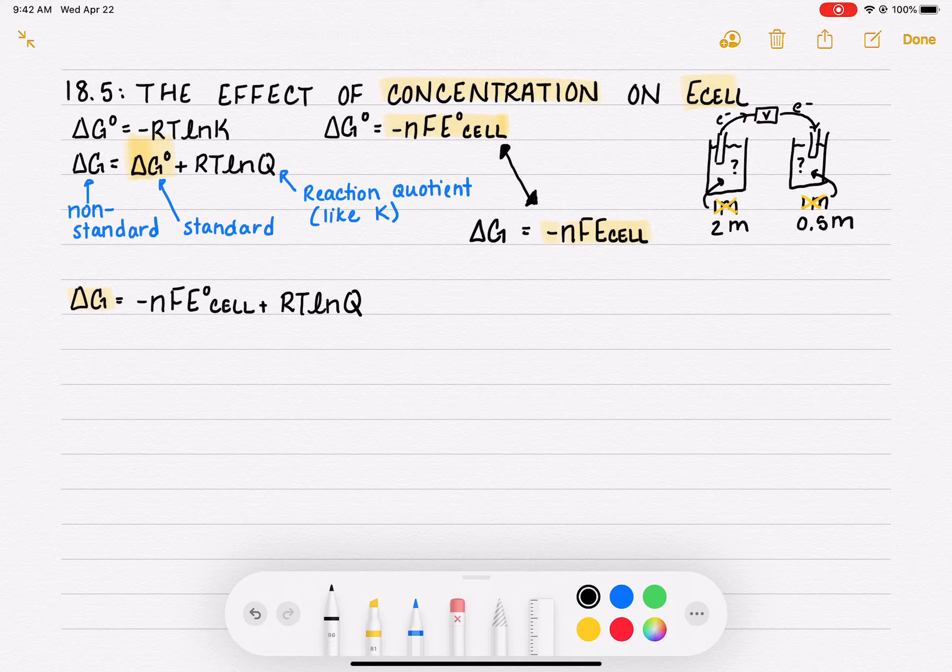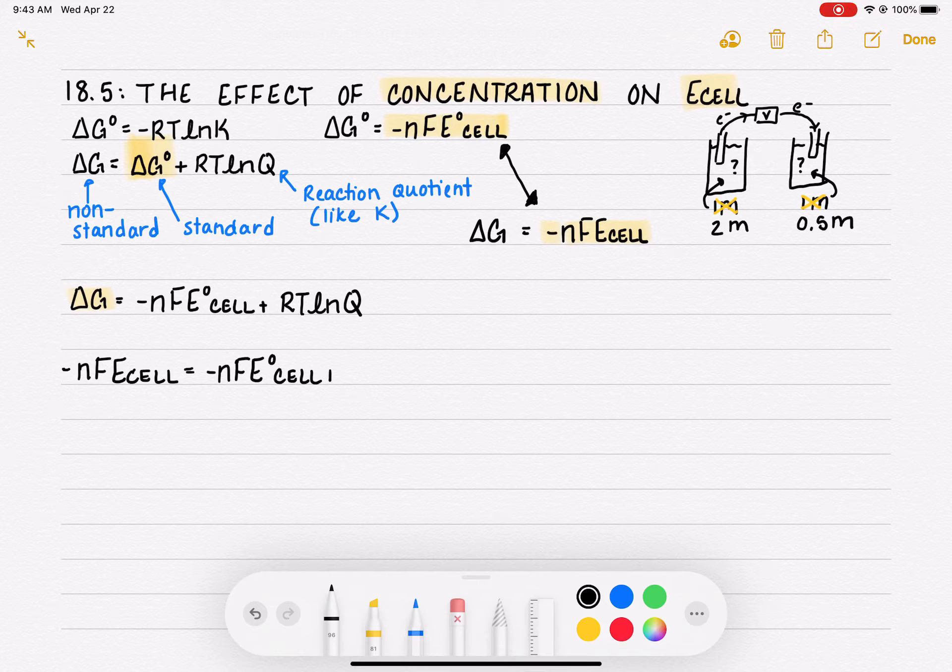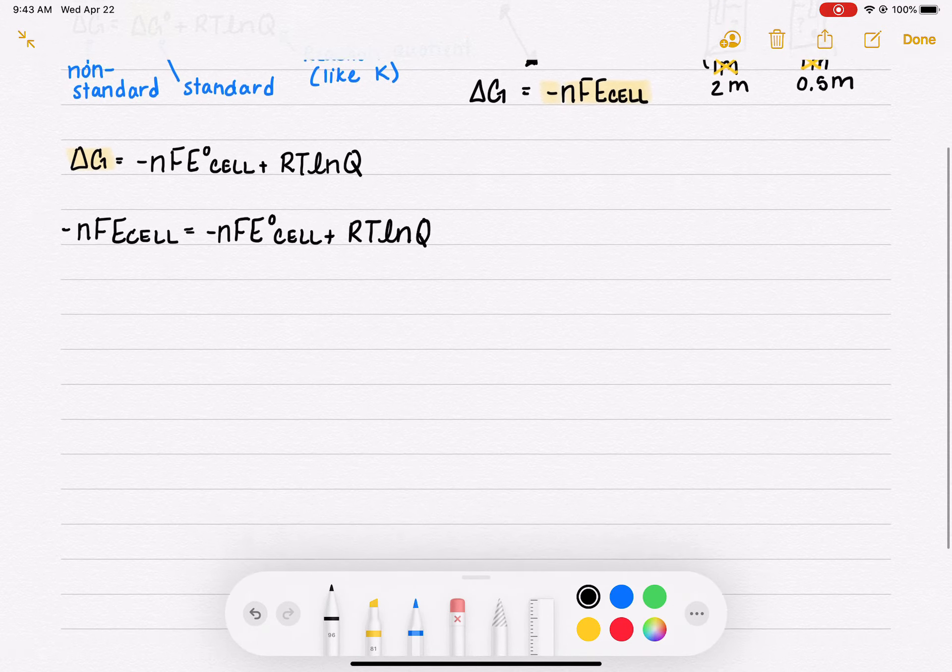What I'm going to do now is plug the non-standard nFEcell in for the non-standard delta G. So I'm going to get another version of this equation: negative nFEcell equals negative nFE°cell plus RTlnQ. I know there's a lot of terms in this equation. It looks pretty cumbersome, but we're going to simplify it.